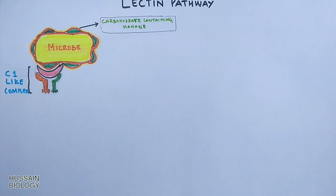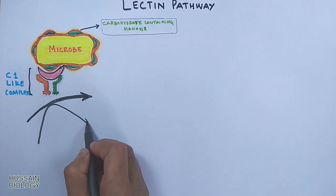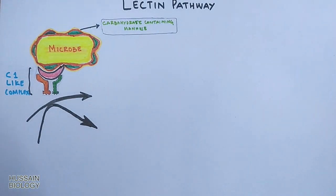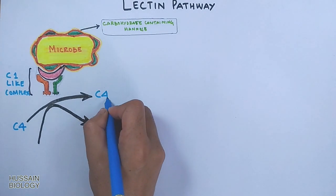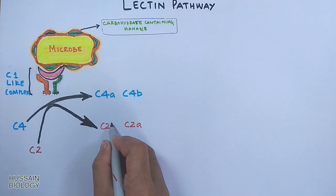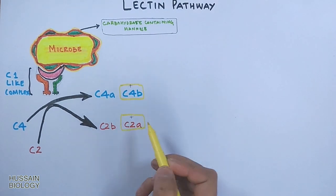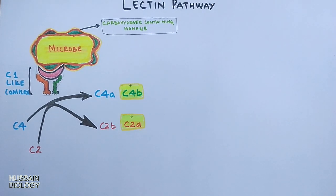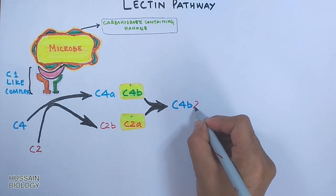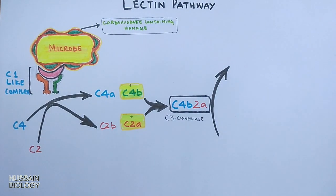This C1-like complex acts on complement proteins. First, the C4 protein is fragmented into C4a and C4b. Then the enzyme acts on C2, fragmenting it into C2a and C2b. C4b and C2a are the larger and active fragments. These two join together to form C4b2a, which is the C3 convertase.